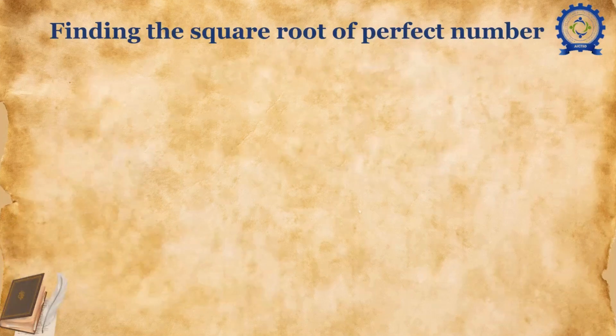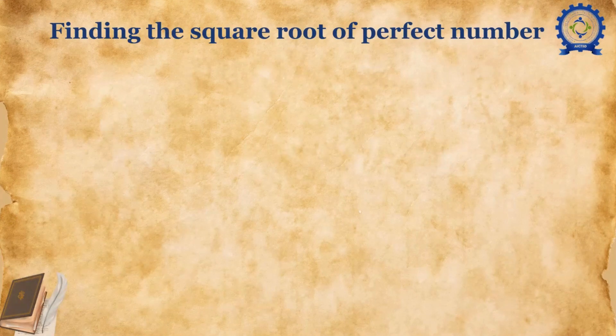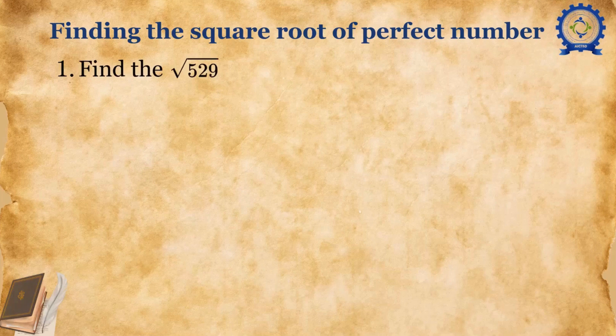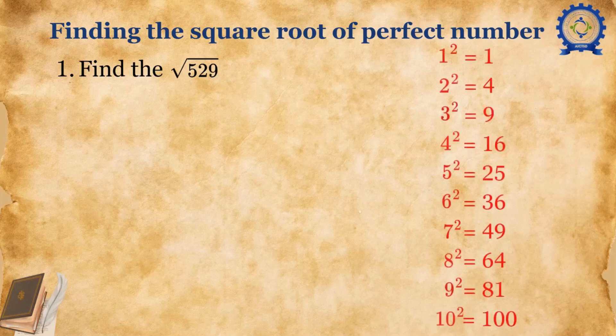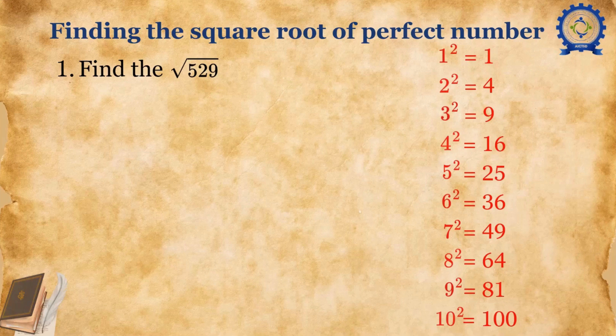Finding the square root of perfect numbers. Let's find the square root of 529. But before we do that, it's important to know the squares of numbers from 1 to 10. This will make the process much easier.